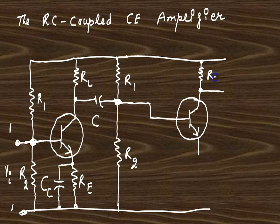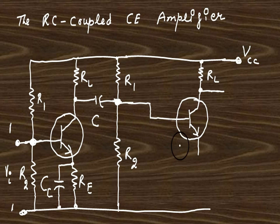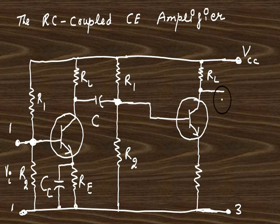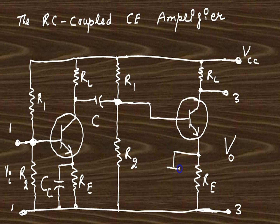There are again four resistors R1, R2, RL, and RE used for biasing, along with power supply VCC. Here again a bypass capacitor CE is placed across RE. The port 3-3 is the output port.